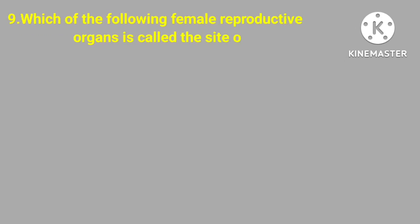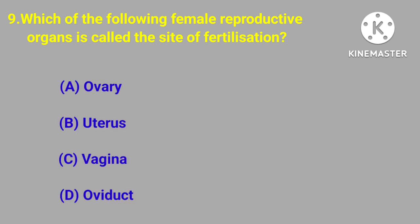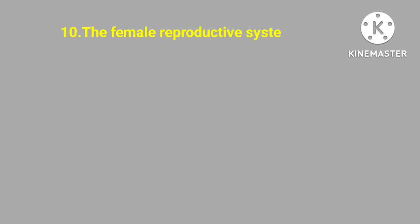Question number nine. Which of the following female reproductive organs is called the site of fertilization? Ovary, uterus, vagina, oviduct. Correct answer is oviduct.